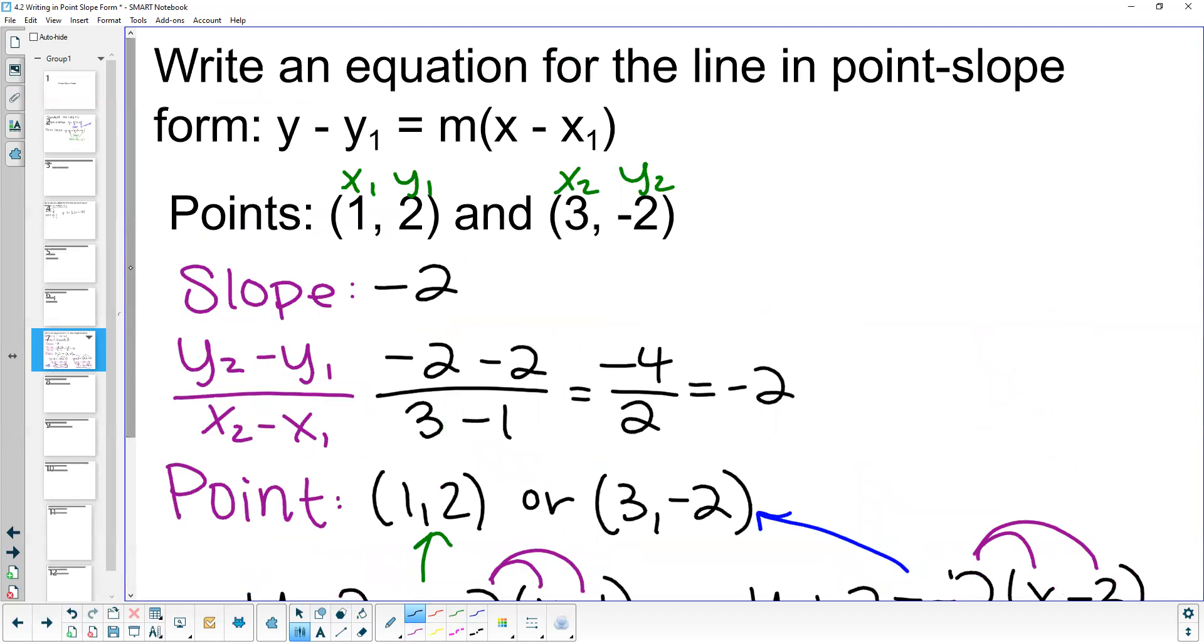There's lots of different things that we can do. Point-slope form has lots of great benefits to it if that's what you're looking for. Otherwise, slope-intercept form works as well, and there is a video on how to write equations in slope-intercept form. If you have any questions, don't hesitate to reach out. But that is how you can write an equation for a line in point-slope form.